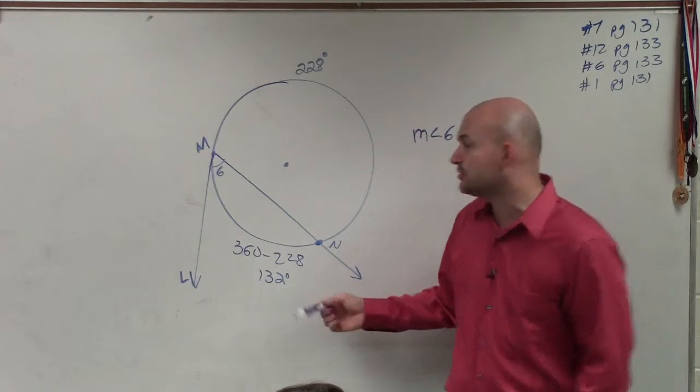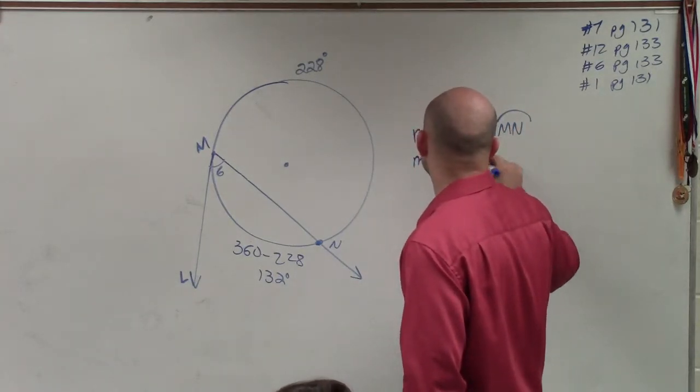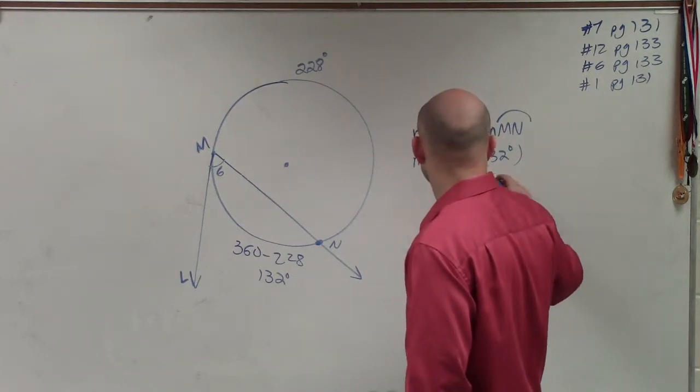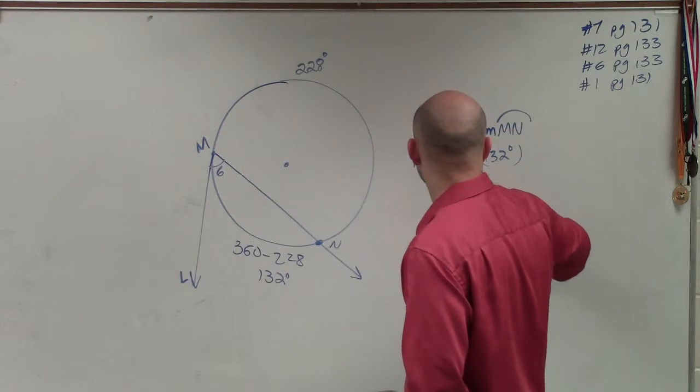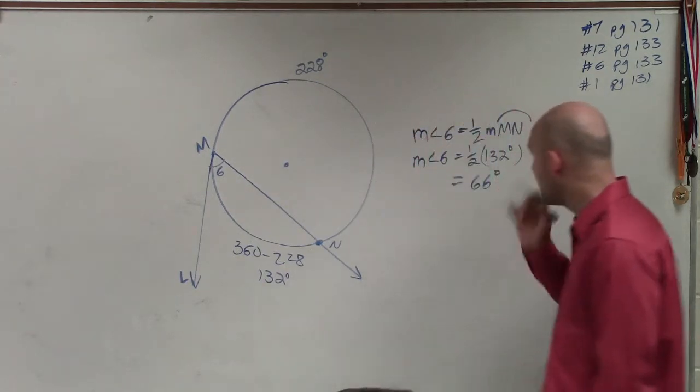In this case, my arc is 132. So I say measure of angle 6 equals 1 half of 132 degrees, so it'd be 66 degrees.